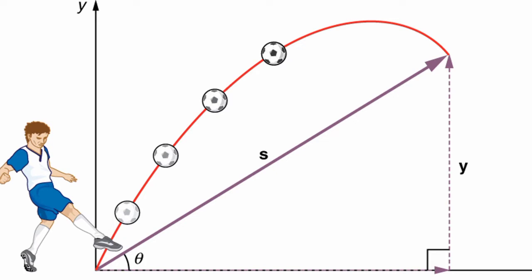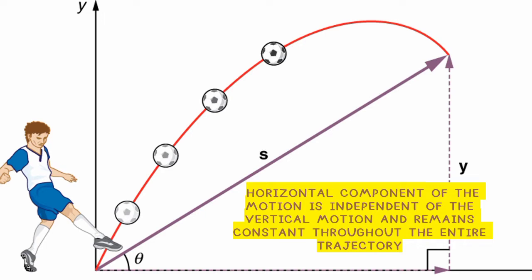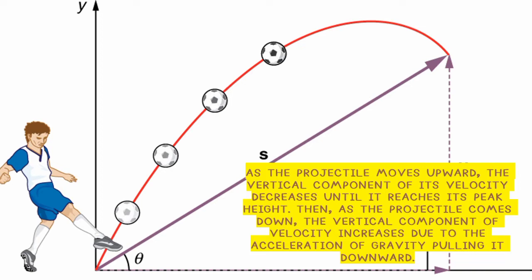In our previous video lesson, we discussed that projectile motion is a form of motion wherein an object given an initial velocity is thrown or projected and is acted on by gravity in a curved path. The horizontal component of motion is independent of the vertical motion and remains constant throughout the entire trajectory. As the projectile moves upward, the vertical component of velocity decreases until it reaches its peak height, then increases as it comes back down due to gravity.